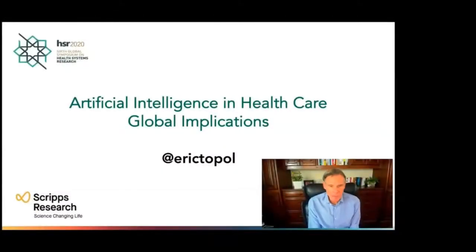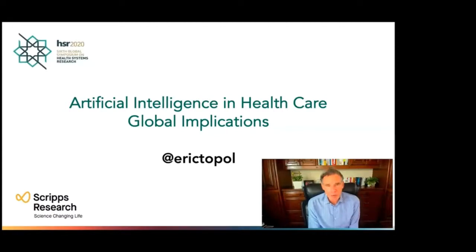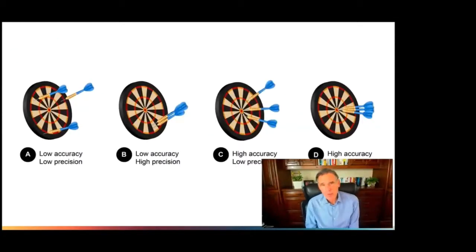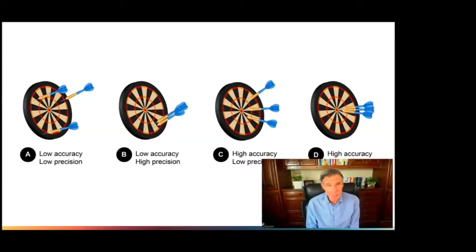Hello, I'm Eric Topol and I'm pleased to join the HSR 2020 sixth global symposium on health systems research. Artificial intelligence and health care — what are the global implications? First, medicine today as it's practiced is not precise, but even more importantly it's not accurate enough. In the United States, for example, there are over 25 million significant medical errors a year, and simply having precision medicine as a buzzword isn't going to fix that. We need to greatly enhance accuracy.